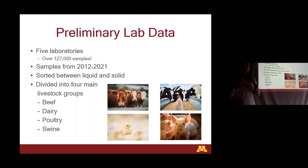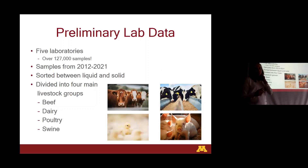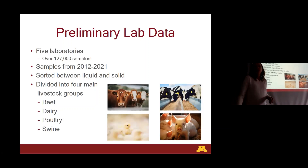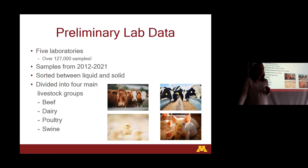In our preliminary laboratory data, we worked with five labs and acquired over 127,000 samples already, ranging from 2012 to 2021. We sorted them into liquid and solid manure, and then divided them into four main livestock groups: beef, dairy, poultry, and swine.